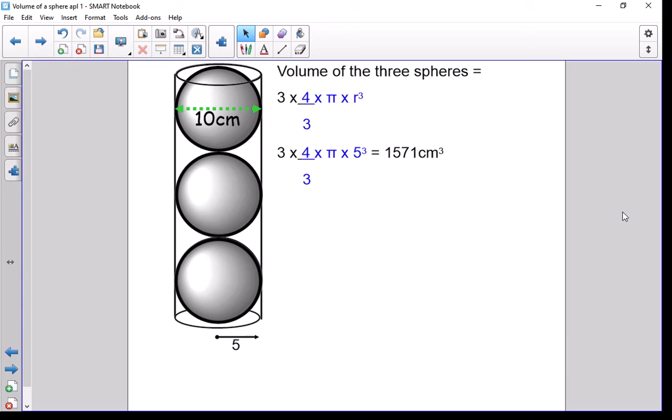If our balls have a diameter of 10, we know the radius is 5. So when we do that—3 lots of 4/3 times π times 5³—we know the volume of our three spheres will be 1571 centimeters cubed.